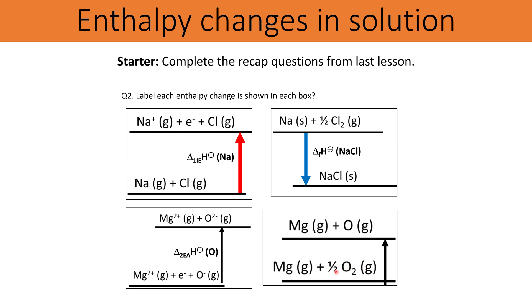Finally you can see that the change that occurs here is we're going from half a molecule of oxygen to just oxygen atoms, which means that the bonds must have been broken within the oxygen. So here what we're looking at is an enthalpy change of atomization for oxygen.